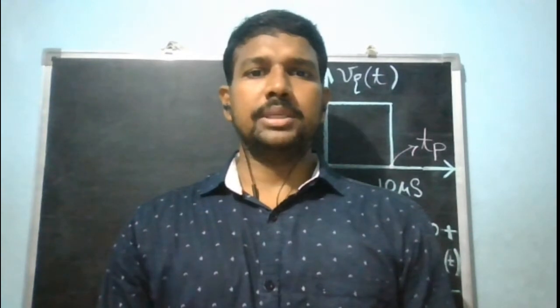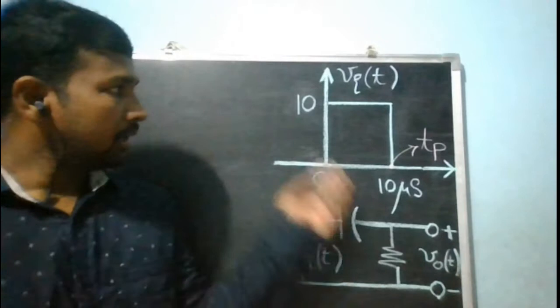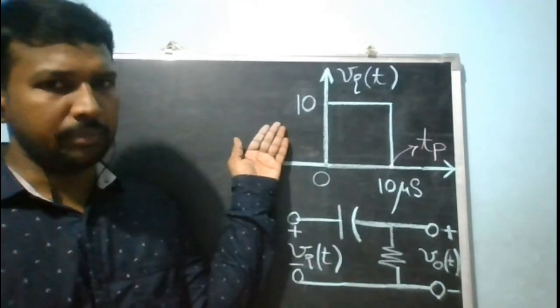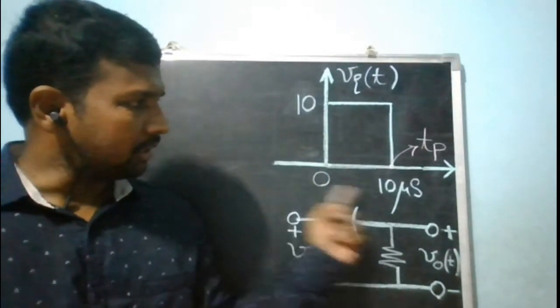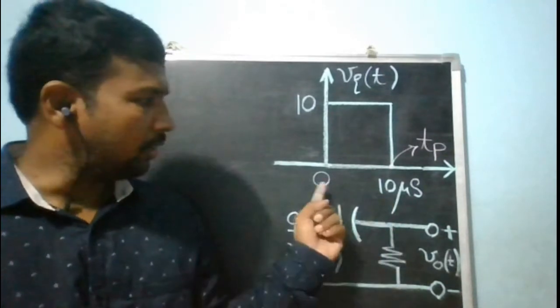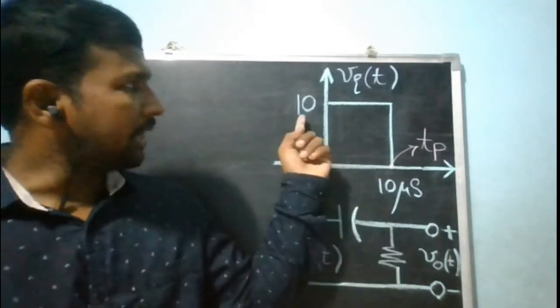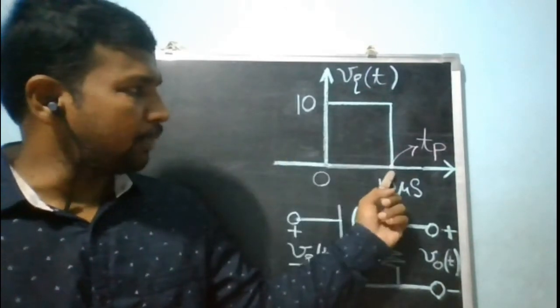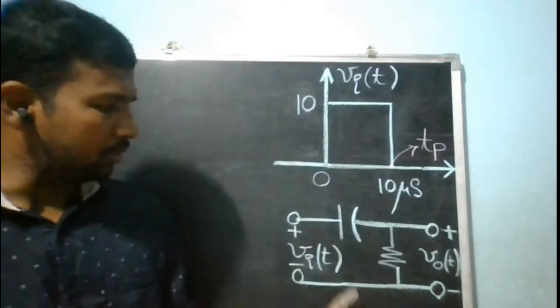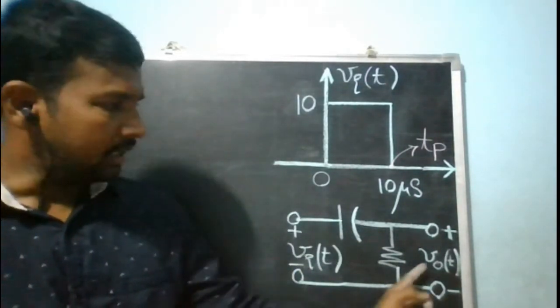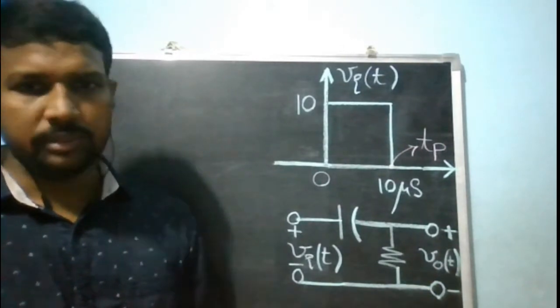Today we are going to discuss a problem based on the response of an RC high-pass filter circuit when a pulse input is applied. Here is the input signal, denoted by vi(t), which is a pulse input with a pulse duration of 10 microseconds over the interval 0 to 10 microseconds. The input value is 10 volts, and this point in time is denoted by tp. When this input signal is applied to the RC high-pass filter circuit, we are asked to find the output voltage.